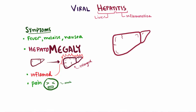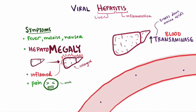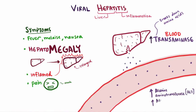As more and more damage is done to the liver, the amount of transaminases in the blood will increase. This is because the liver has these transaminase enzymes so it can break down various amino acids. Typically the serum aminotransaminase is pretty low, but when hepatocytes start getting damaged, they start leaking these into the blood. So a common sign is a greater amount of both alanine aminotransferase, or ALT, and aspartate aminotransferase, or AST.